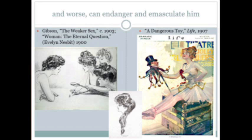Another famous Gibson image shows a woman in profile whose hair creates a kind of question mark. This was the infamous Evelyn Nesbitt, involved in the most famous sex scandal of the day. Then there is 'The Dangerous Toy' — and who is the toy and who is dangerous? We can surmise what Gibson is talking about.